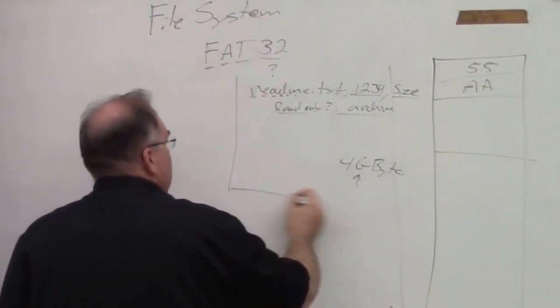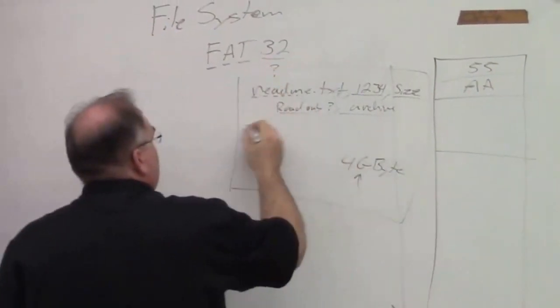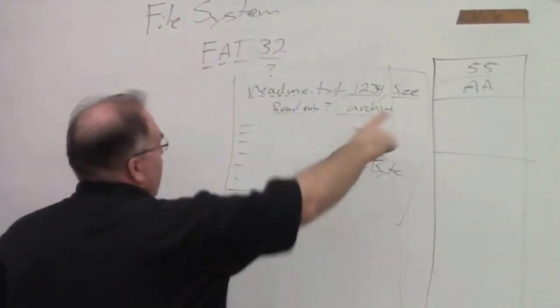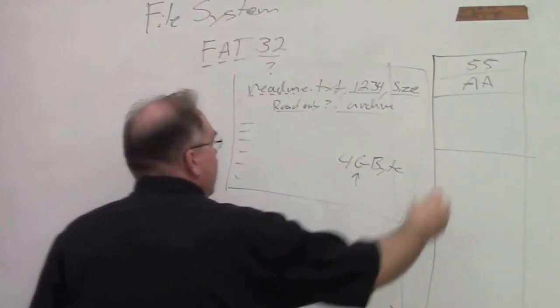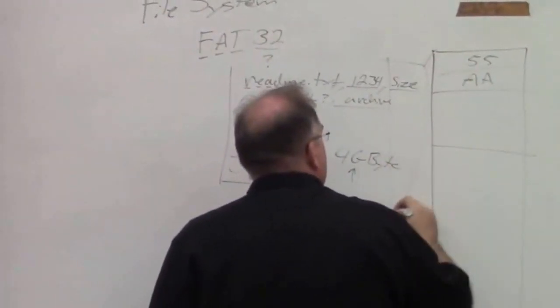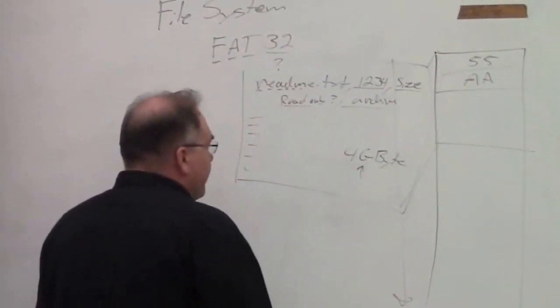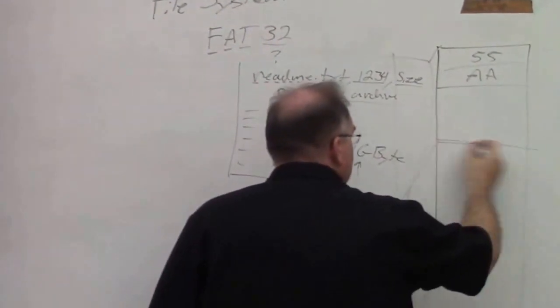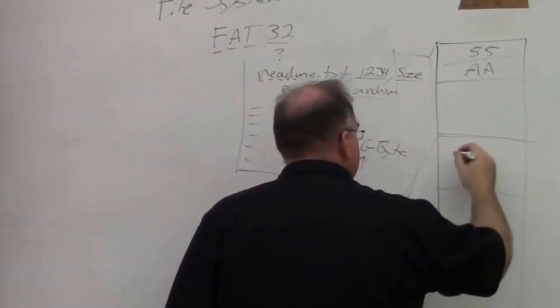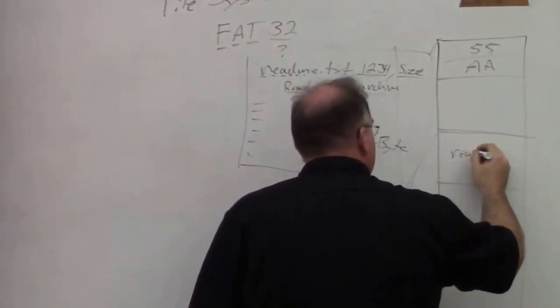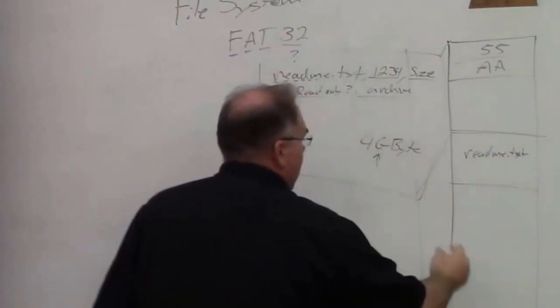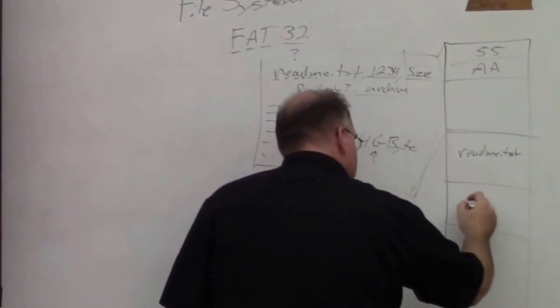But in this file allocation table, you'll be able to store so many file names and their location. And then, so let's say your file allocation table is here in memory, and then your actual files are going to be somewhere down in memory. So maybe this is the readme file. And then there's another file down here, file one.